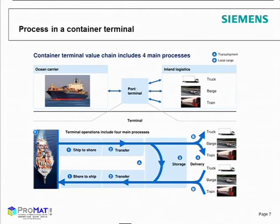Here you see the process in a container terminal. The vessel arrives at the quayside, where you have ship-to-shore equipment. In the middle you have the static stacking area, the transfer area. And then you have the rail and road connection to the hinterland. This is the very simple process which you find in a port.